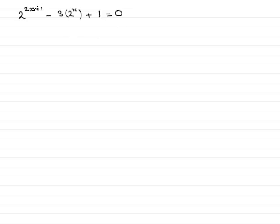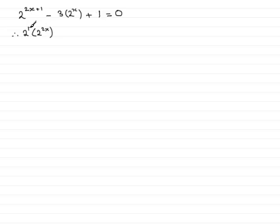We need to modify this first term. When you're adding powers, 2 to the power 2x plus 1 is the same as 2 to the power 1 being multiplied by 2 to the power 2x, because they share the same base 2 — you add the powers to give 2 to the power 2x plus 1.